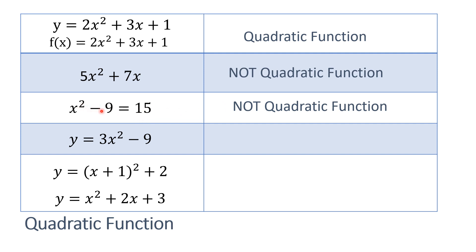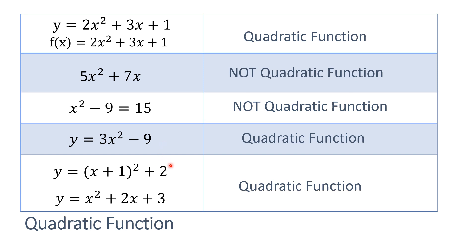Third example: x squared minus 9 is equal to 15. Is it a quadratic function? Again, it is not a quadratic function because we are not giving a function to your variable x, or there is no value of y. Now for the fourth example, y is equal to 3x squared minus 9 — yes, it is a quadratic function. And for the last example, y is equal to x times the quantity of x plus 1 squared. You can also rewrite this as y is equal to x squared plus 2x plus 3 when you expand, and this simplified form is also a quadratic function.